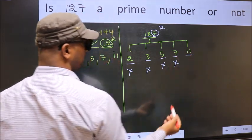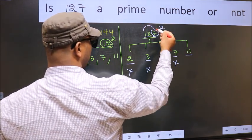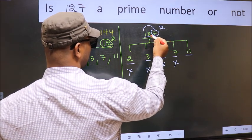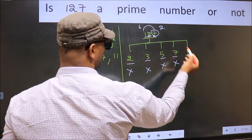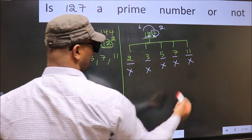Now to check divisibility by 11. For that, you add alternate numbers. 1 plus 7, 8. Subtract from this. 8 minus 2, 6. 6 is not divisible by 11. So this number is also not divisible by 11.